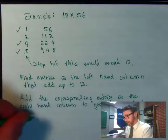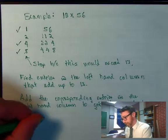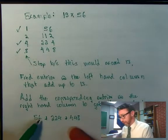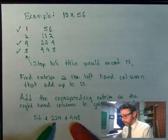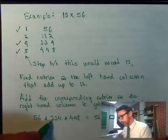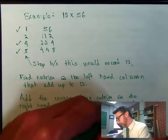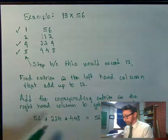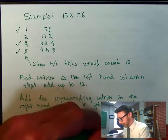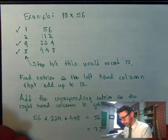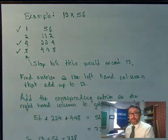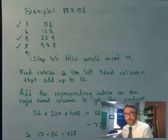And what we do is we add the corresponding entries to the right-hand column to get the product. So what we would do is we would take 56 plus 224 plus 448. So let's quickly add those up. 448 plus 224. Do this in two steps. So if I add these two, I get 672. So it looks like I'm getting 728 as the product. So 13 times 56 is 728 using the Egyptian method of multiplication.